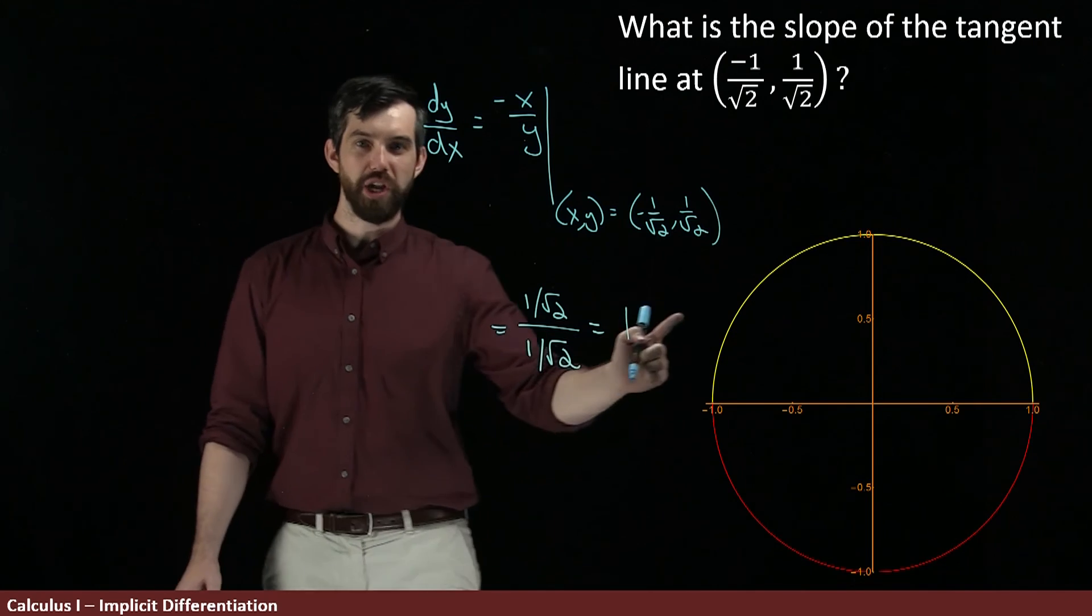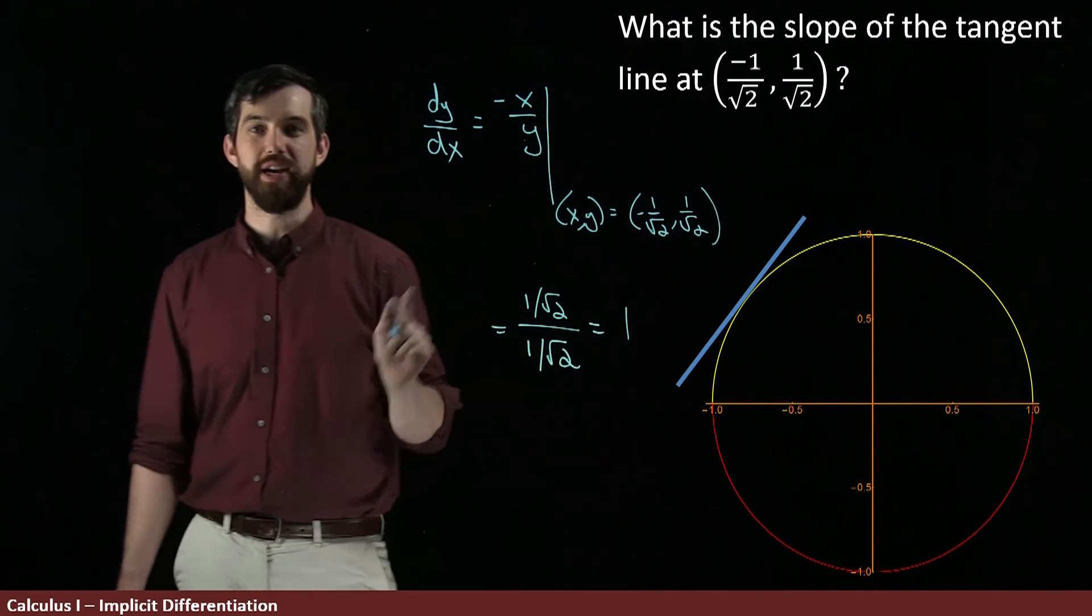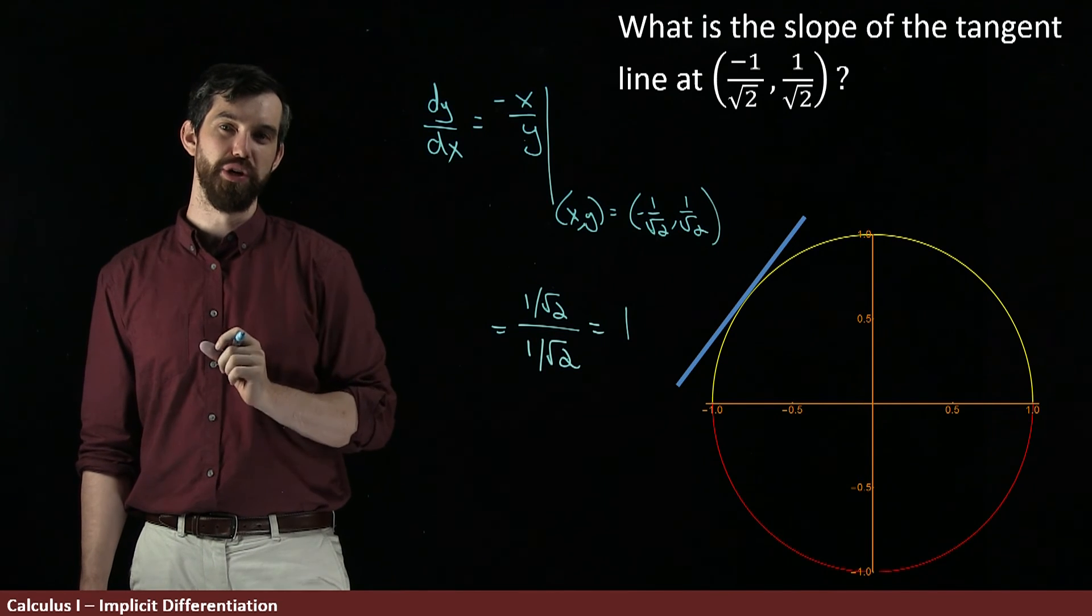And then if I want to plot it, so I'm looking around here, and this is going to be my tangent line. It looks like I've got a nice slope of 1, and it occurs at this point minus 1 over root 2, 1 over root 2.